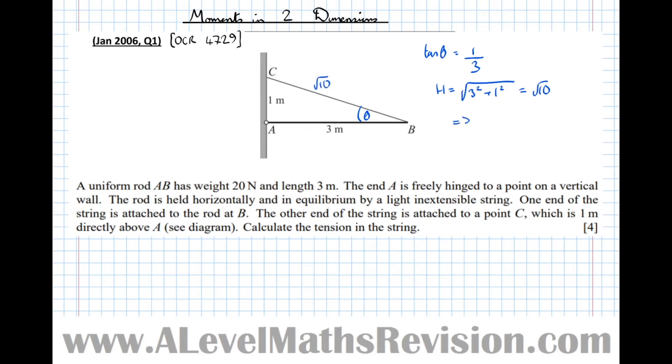So now we can work out sine theta, which is opposite over hypotenuse, so 1 over root 10. And we can work out cos theta, which is adjacent over hypotenuse, which is 3 over root 10.